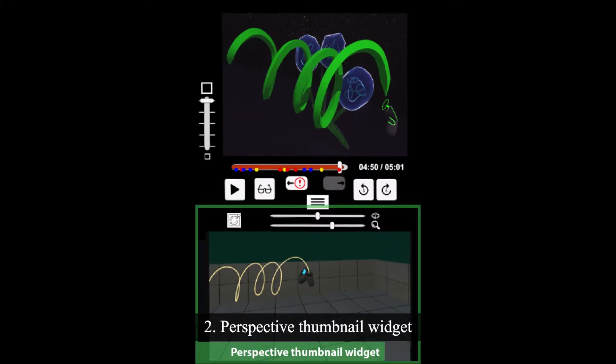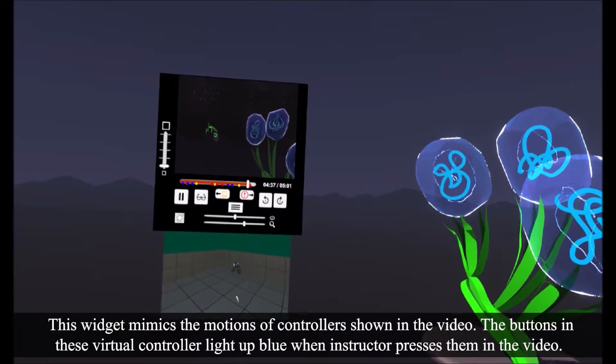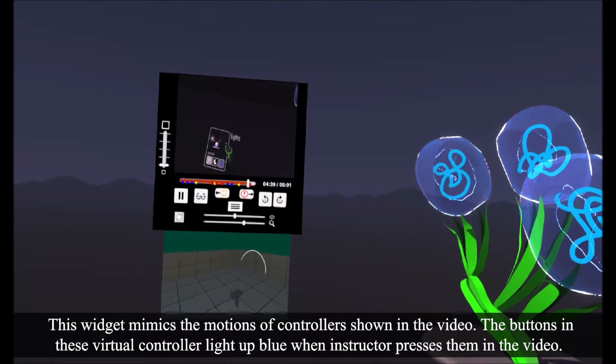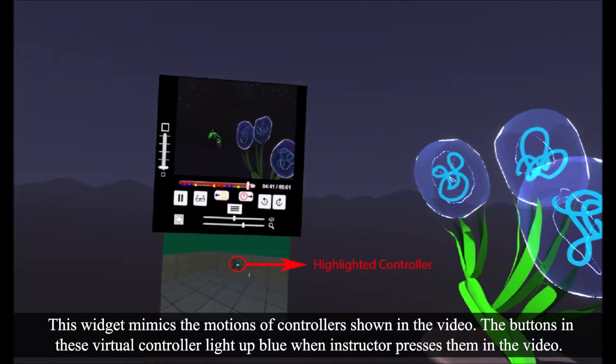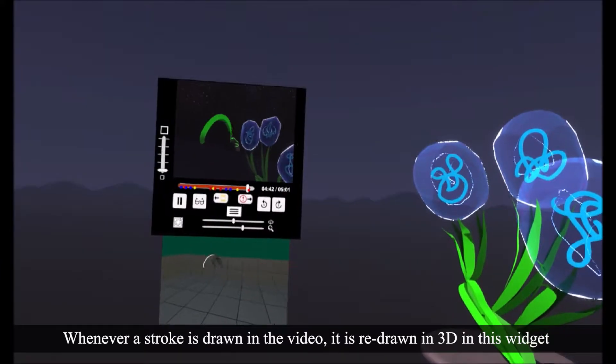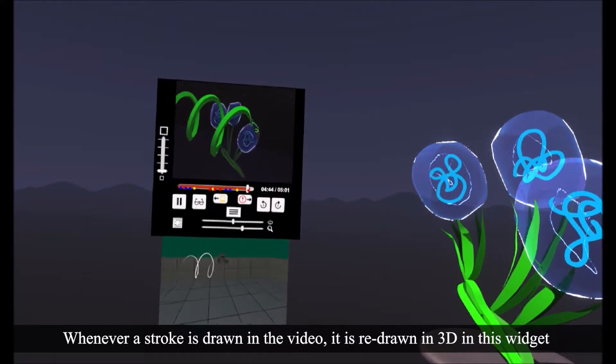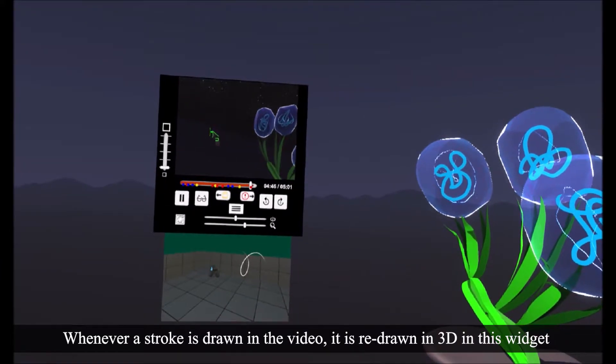Second, Perspective Thumbnail Widget. This widget mimics the motions of controllers shown in the video. The buttons in these virtual controllers light up blue when the instructor presses them in the video. Whenever a stroke is drawn in the video, it is redrawn in 3D in this widget.